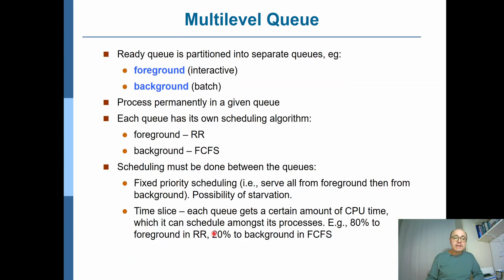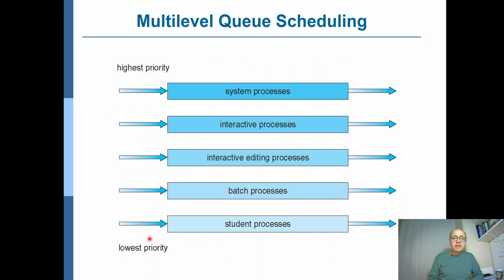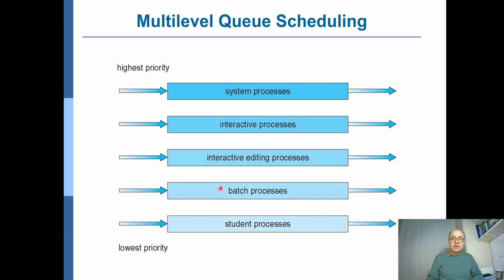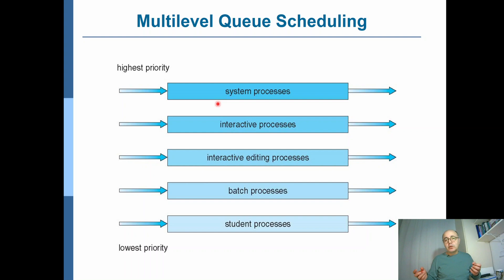As mentioned, if you take the second approach by giving each queue some time slice — say system processes take 20% of the time, interactive processes another 20%, interactive editing 15%, and so on — you can distribute CPU time between the queues. But still, if the mix of processes changes in the system, some queues might be heavily loaded while others are lightly loaded, so it still wouldn't be fair and proper execution.